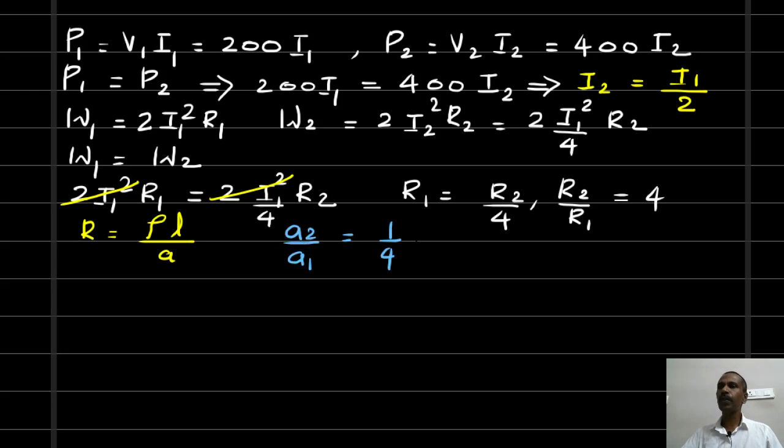Next we have to find out the volume. As you know, the volume equals area into length, but the length of the transmission line we cannot change, it is fixed. So volume is proportional to area of cross section. So we can write V2 divided by V1 is equal to 1 by 4.